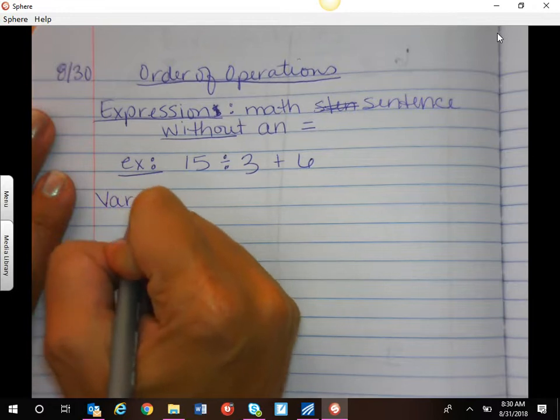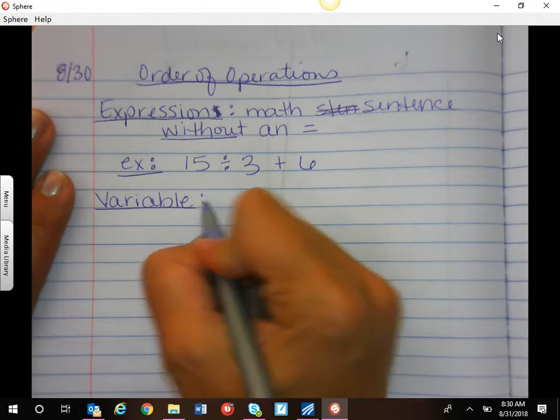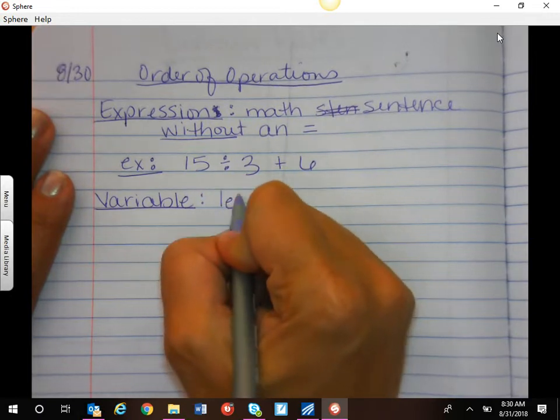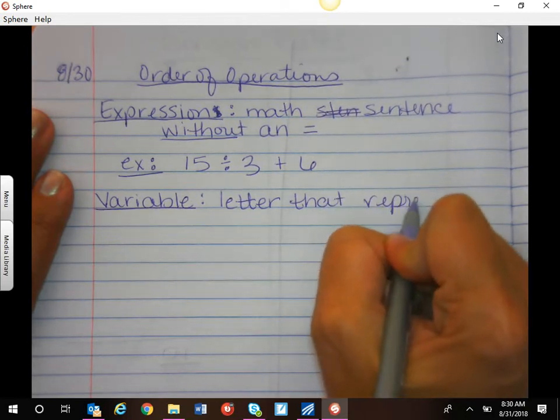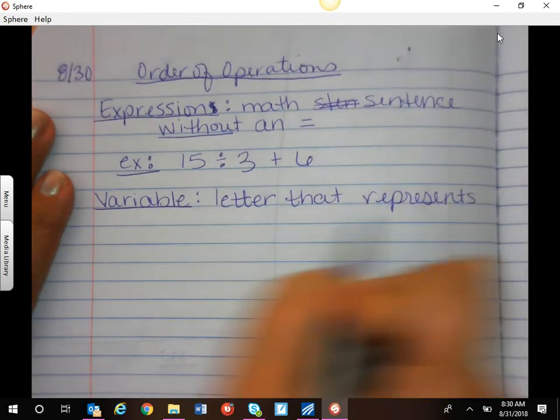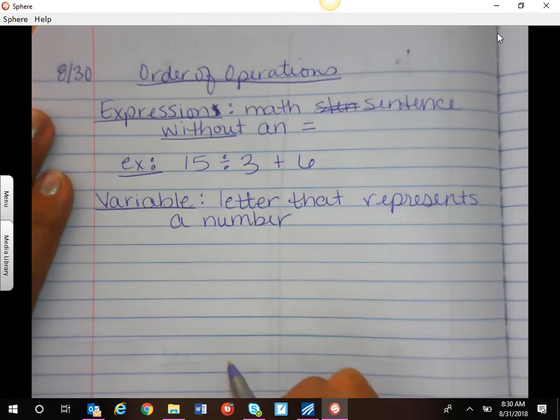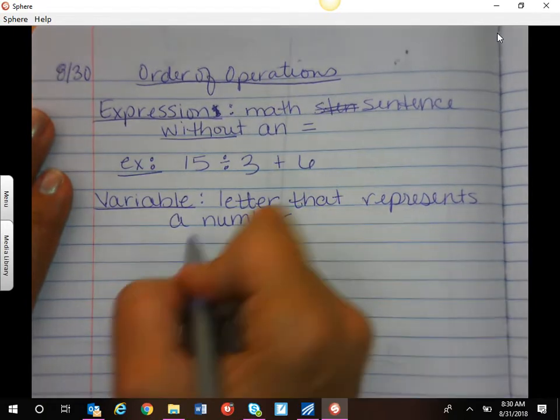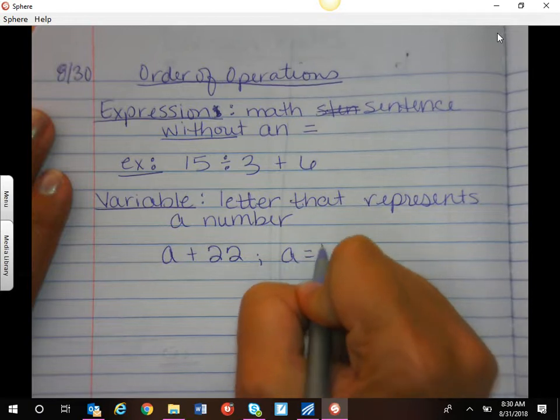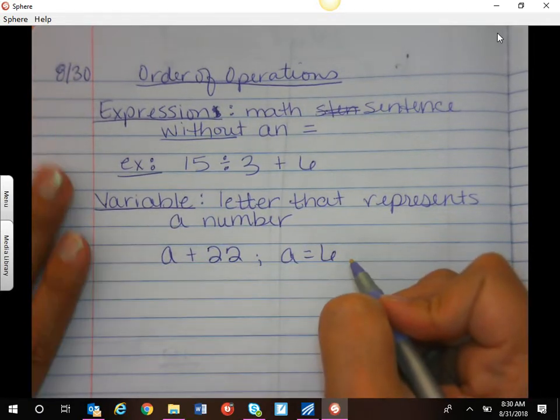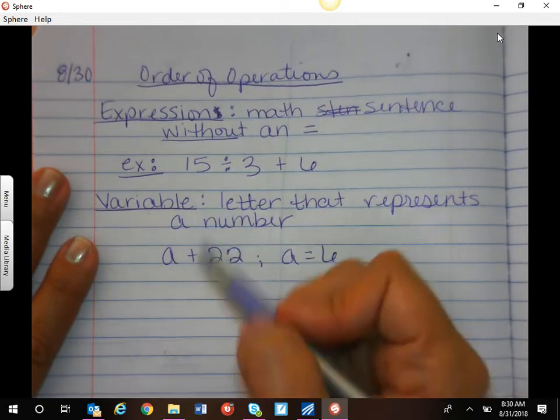Sometimes our expressions have variables. And we talked about this word a lot this week. A variable is a letter that represents a value or a number. So earlier this week, we saw maybe a plus 22, and I might tell you a equals 6. So then you could evaluate the expression by plugging the 6 in and solving.